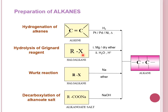The second reaction uses a haloalkane as a reactant. It is turned into a Grignard reagent first using magnesium in dry ether, and then it is hydrolyzed to produce an alkane. The third one — Wurtz reaction — also uses haloalkane as a reactant and uses sodium metal as the reagent. Lastly, decarboxylation of alkanoate salt uses RCOO⁻Na⁺ as the reactant and sodium hydroxide as the reagent to produce an alkane.